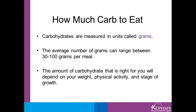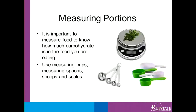Carbohydrates are measured in units called grams. The average number of grams of carbohydrate can range between 30 to 100 grams per meal. The amount of carbohydrate that is right for you will depend on your weight, physical activity, and stage of growth. It is important to measure food to know how much carbohydrate is in the food you are eating. Use measuring cups, measuring spoons, scoops, and scales to determine portion sizes for accurate carbohydrate counting. Accuracy with carb counting can help with blood sugar control.